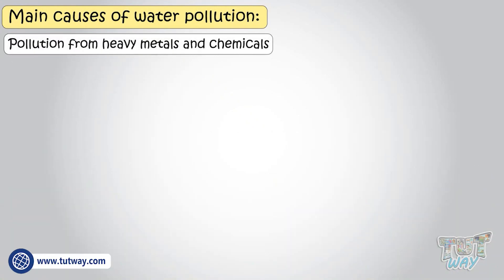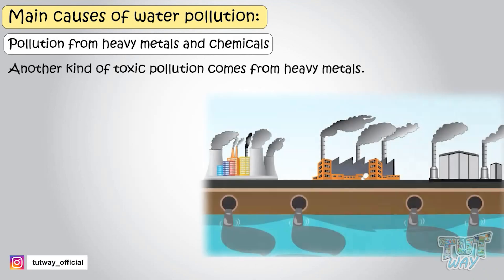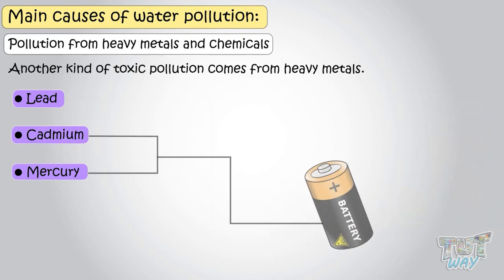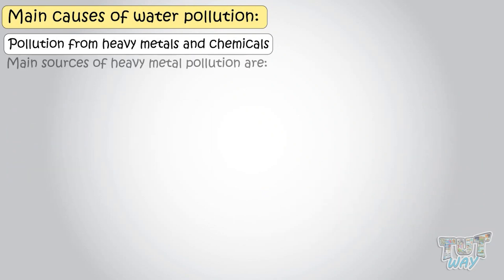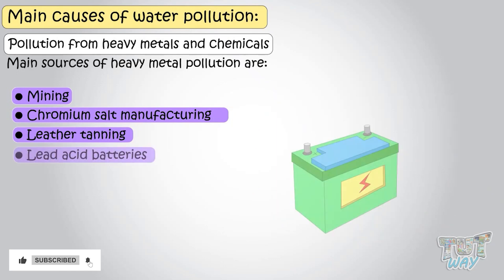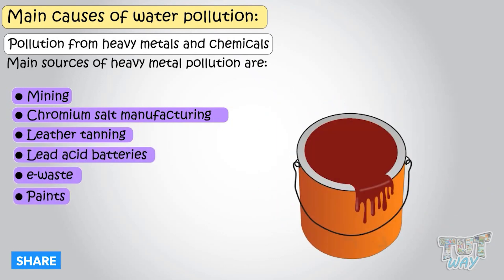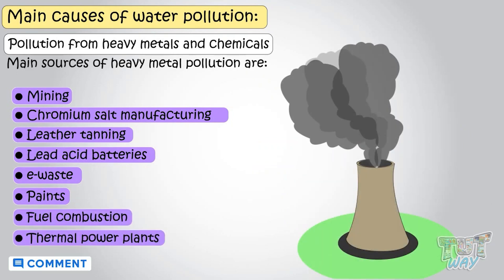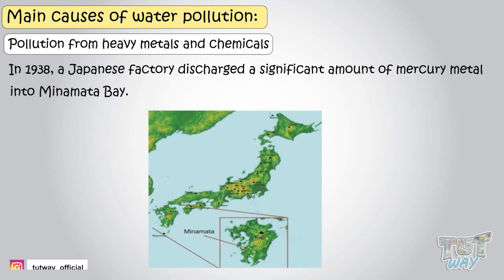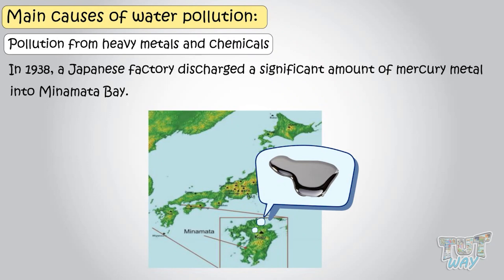Another kind of toxic pollution comes from heavy metals and chemicals, such as lead, cadmium, and mercury. Lead was once commonly used in gasoline, though its use is now restricted in some countries. Mercury and cadmium are still used in batteries. Main sources of heavy metal pollution are mining, chromium, salt manufacturing, leather tanning, lead acid batteries, e-waste, paints, fuel combustion, and thermal power plants. The best-known example of heavy metal pollution in the oceans took place in 1938 when a Japanese factory discharged a significant amount of mercury into Minamata Bay, leading to the death of so many fish.